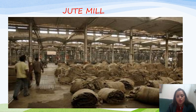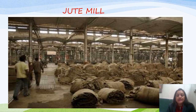The next agro-based industry is the jute mill. Jute mills take jute as a raw material. Jute is used to make doormats, ropes, decorative items, and sacks used as packing material. Most of the jute mills are in or around Kolkata because most of India's jute is produced near Kolkata. The main centers are Kolkata, Rishra, and Titagar or Howrah.